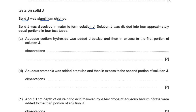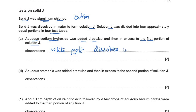Solid J is aluminium chloride. It was dissolved in water to form solution J, which was divided into four portions. Aqueous sodium hydroxide was added dropwise then in excess to the first portion. Sodium hydroxide tests for the cation — aluminium produces a white precipitate initially. On adding excess sodium hydroxide, the white precipitate dissolves. Write: white precipitate forms, precipitate dissolves in excess sodium hydroxide.